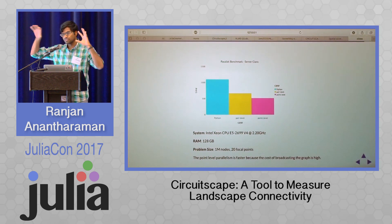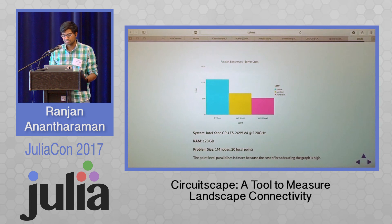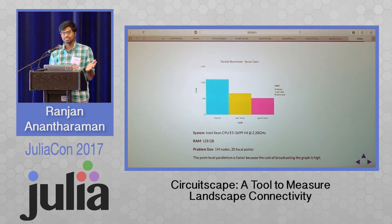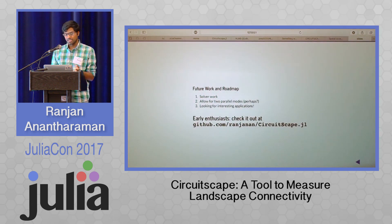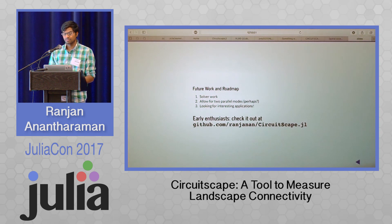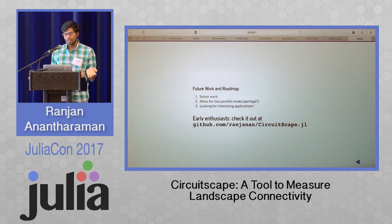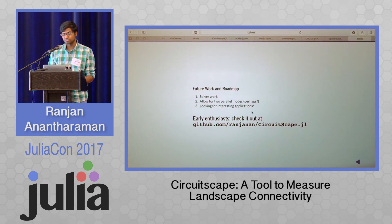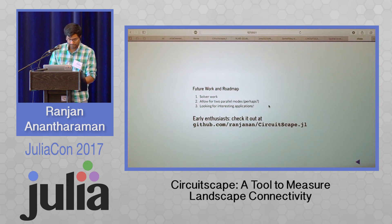On a server-class machine with multiple sockets and multiple nodes, the broadcast cost can be pretty high, so the question is how to rearrange computations for maximum efficiency — something I'm still working on. For future work, I'll be improving the solver and complementarily improving parallel execution. I may allow two parallel modes and let the user choose. I'm always looking for interesting applications and collaborations, so if you have an interesting use case, check out the pre-alpha version on the GitHub repository and get in touch. Thank you.